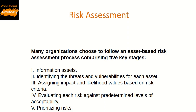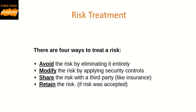The third key in the process is risk treatment. There are four ways to treat a risk: 1. Avoid the risk by eliminating it entirely. 2. Modify the risk by applying security controls. 3. Share the risk with a third party, like insurance. 4. Retain the risk, if the risk was accepted.